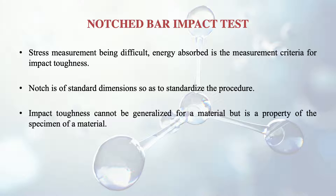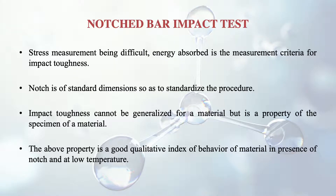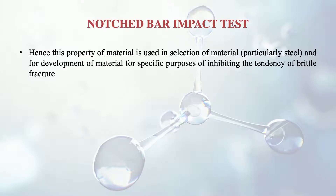Impact toughness cannot be generalized for a material but is a property of the specimen of that material. This property of impact toughness is a good qualitative index of the behavior of a material in the presence of a notch and at low temperature. This property is used in the selection of material and for development of material for specific purposes of inhibiting the tendency of brittle fracture, particularly in the case of steel.